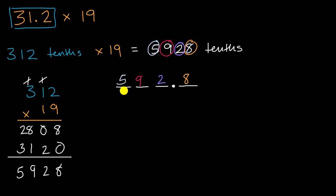Another way to think about it is we wrote all the places out, and we wrote it in terms of tenths. So the eight went there, and then every place to the left of that went to the place to the left of that. So this is going to be 592 and eight tenths. So we could write it like that, 592.8.